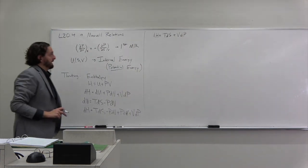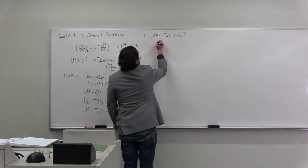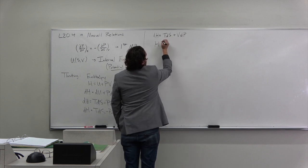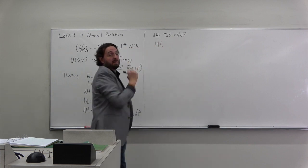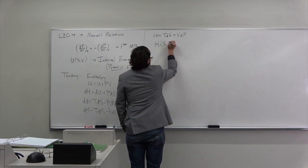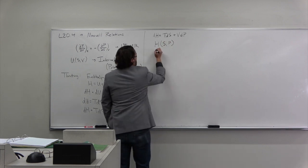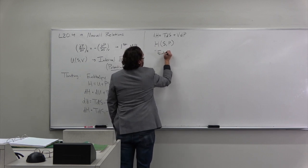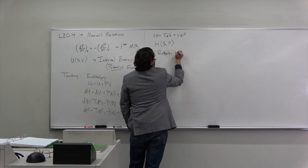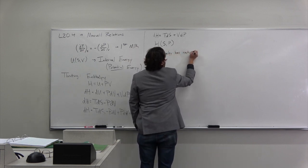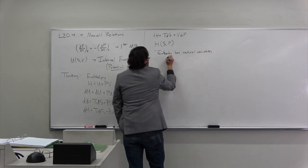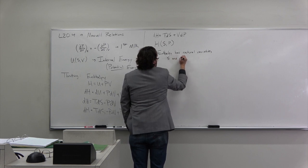For enthalpy, the natural variables are those that appear in the differentials, which are S and P. So we can say that the enthalpy has natural variables S and P.